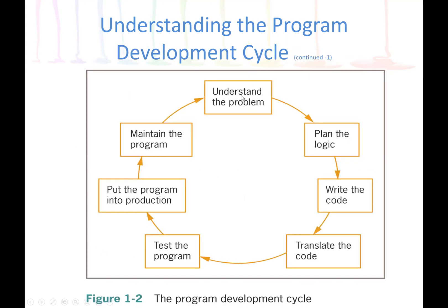So this is the diagram. Again, we understand the program first, then plan the logic — this is the design phase. Then implement the program or write the code, translate the code to machine language, test the program. If everything is good, we put the program into production, and as time goes on, we maintain the program.